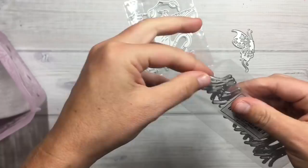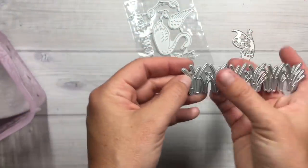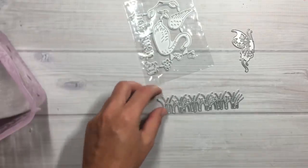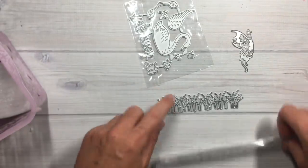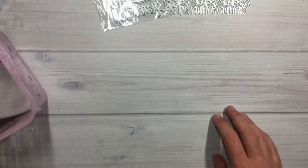Next is this one right here, it's a little grass. I like that it showed each blade of grass but it was all welded together. This guy is about four and a half inches long, great die to have in your stash.